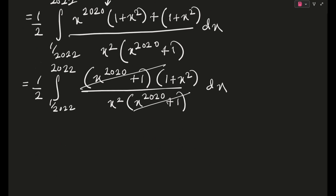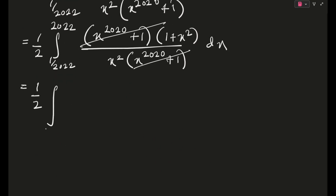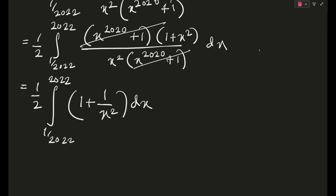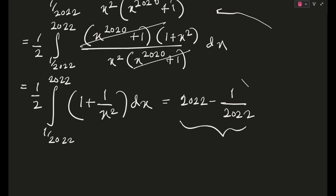After cancellation, what remains is: 2I = half times the integral from 1/2022 to 2022 of (1 + 1/x²) dx. This simplifies beautifully to a standard integral. Evaluating gives the final answer: 2022 − 1/2022.